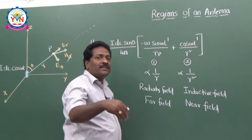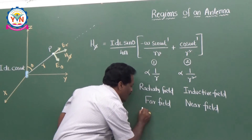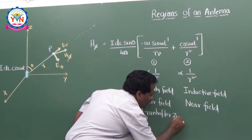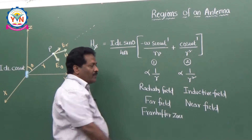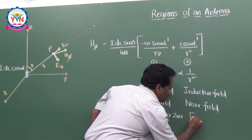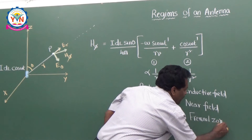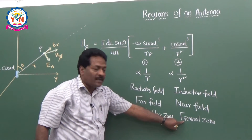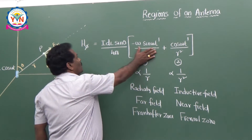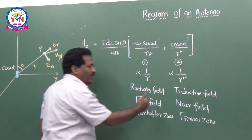According to physics terminology, the far radiating term corresponds to the Fraunhofer zone — where you can observe radiation and information. The near inductive term corresponds to the Fresnel zone, which is close to the antenna. So from the expression for H_phi, there are two types of fields: the far field (Fraunhofer zone) and the near field (Fresnel zone).